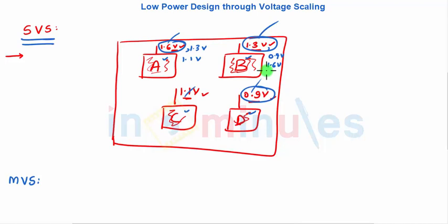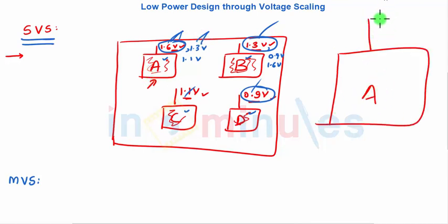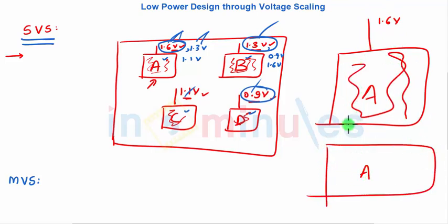At different instances of time, different blocks of the circuits - let's zoom into A, this is my A - in static voltage scaling, it only had a fixed voltage of 1.6V and all blocks were operating at 1.6V. In multiple voltage scaling, A would have 1.6V and say 1.3V. These are different blocks in A.